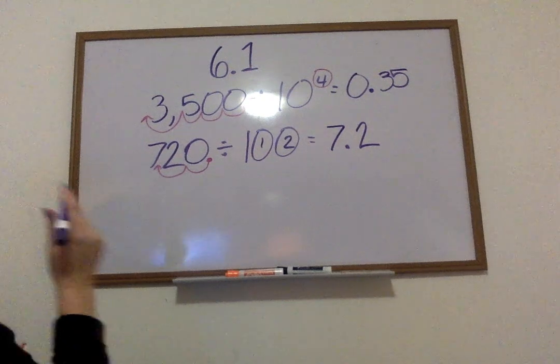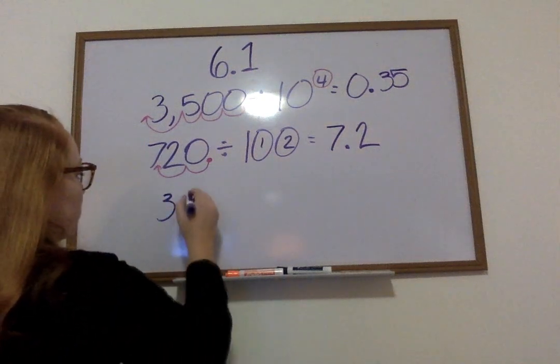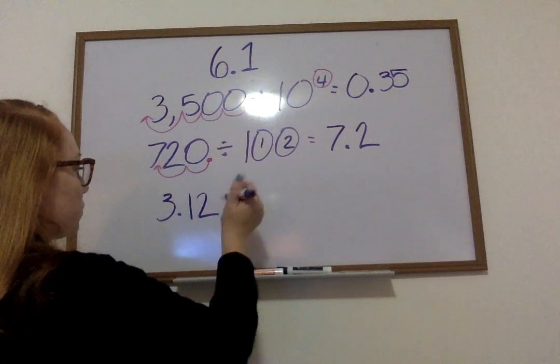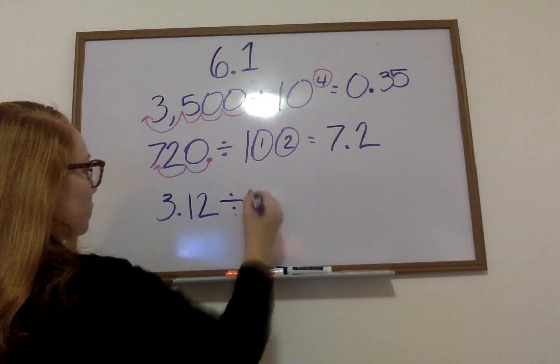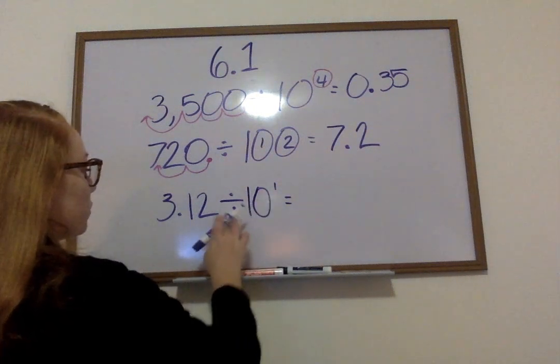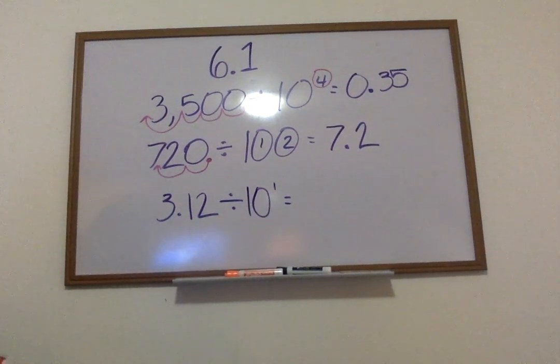What if I had this equation? Three and twelve hundredths divided by ten to the first power. We know that my number is going to get smaller. It's going to move to the left because it's being divided by a product of ten.